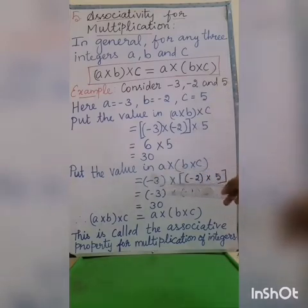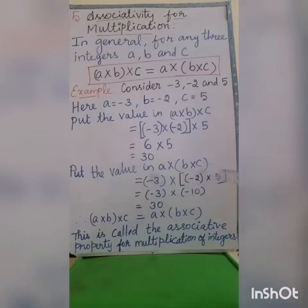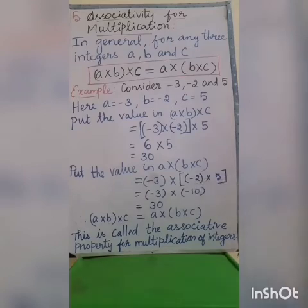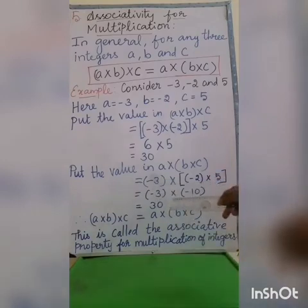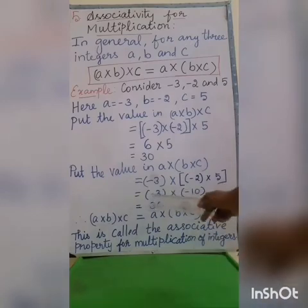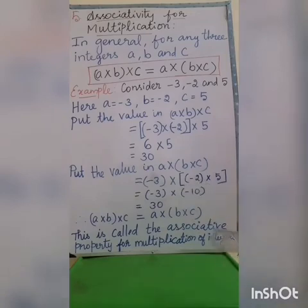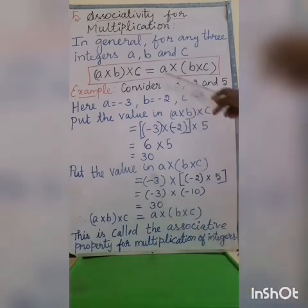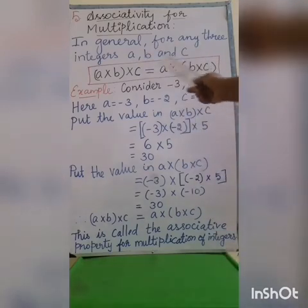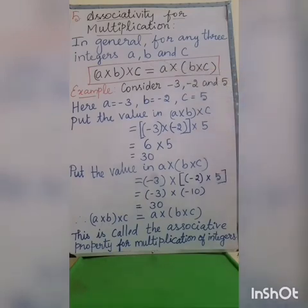Now the right-hand side: a × (b × c) = −3 × (−2 × 5). First calculate −2 × 5: multiply 2 × 5 = 10, and minus × plus = minus, so we get −10. Then multiply −3 × −10: 3 × 10 = 30, and minus × minus = plus, so the answer is 30. Left-hand side equals right-hand side (both are 30), so it is satisfied for the associative property of multiplication.